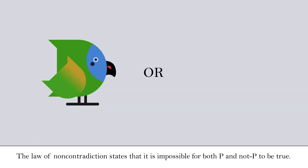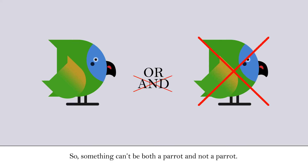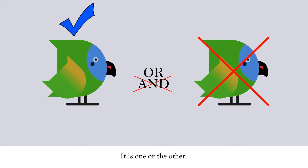The law of non-contradiction states that it is impossible for both p and not p to be true. So something can't be both a parrot and not a parrot — it is one or the other.